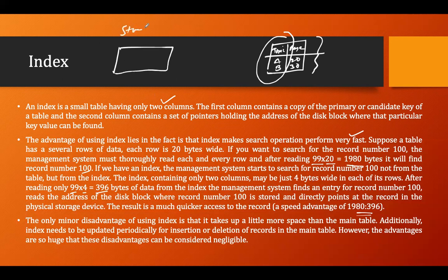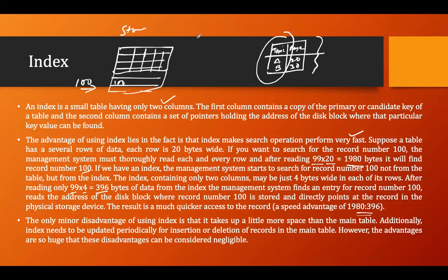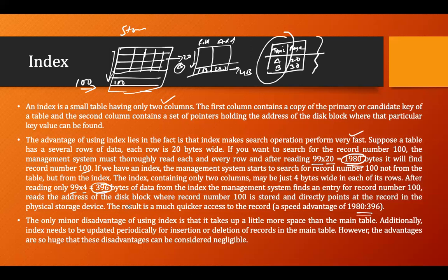After reading 396 bytes of index data, the system finds the entry for record 100, reads the address of the disk block where record 100 is stored, and directly points to that record in physical storage. For example, in a student table looking for roll number 100, the index gives us the address — say 2020 — directly, requiring only 4 bytes per row in the index versus 20 bytes per row in the full table. Searching time is significantly reduced.